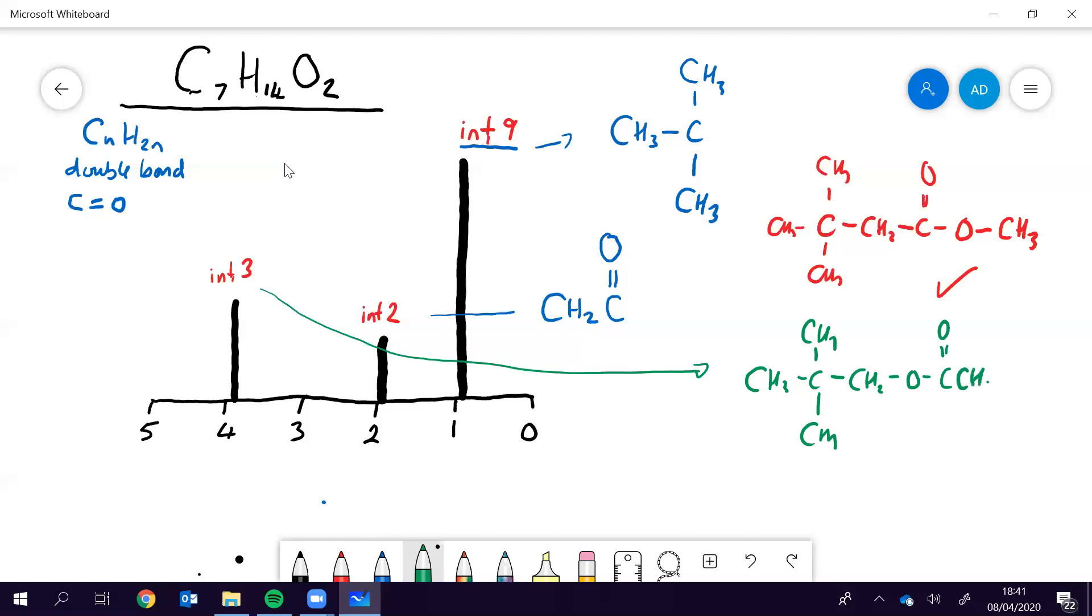That looks almost right. The only reason you could tell, so that would give you singlets, so singlet will give you this one integrated three, this one integrated two, and these ones integrated nine.